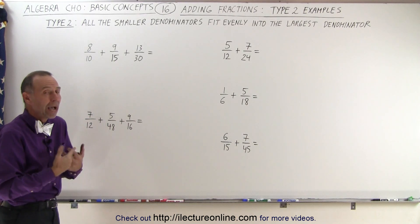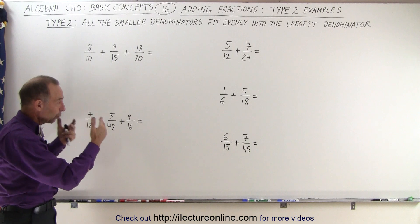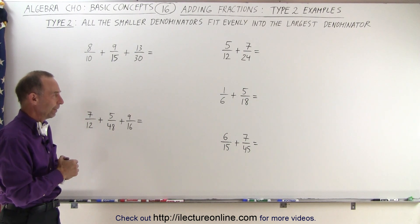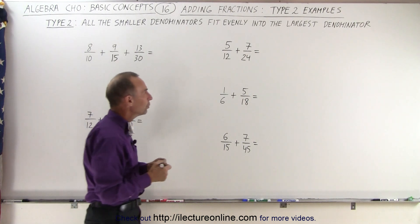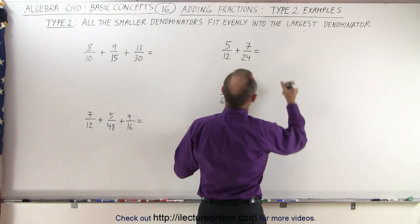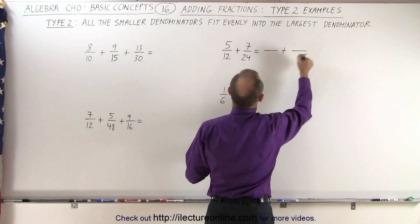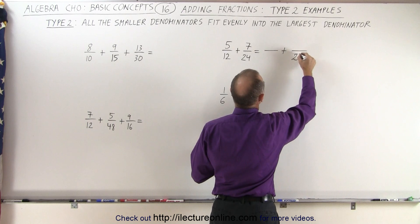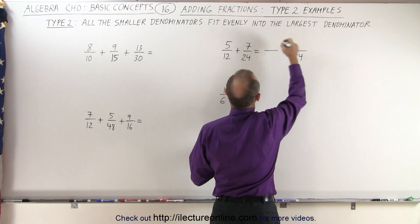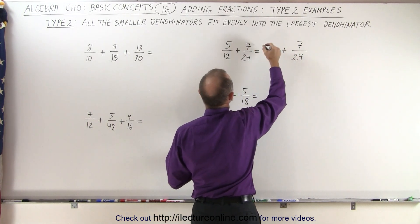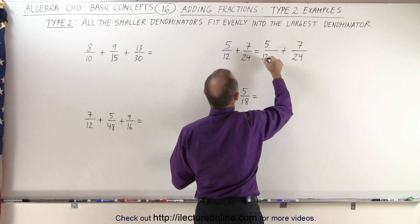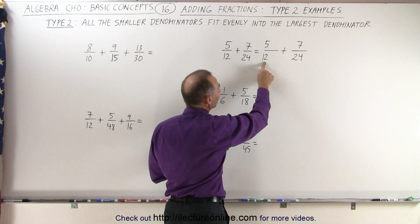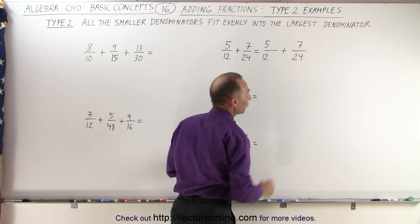Now we're going to show you how to add those fractions where you have the smaller denominators fitting evenly into the largest denominator. What you're going to do is write new fractions. The one that goes unchanged is the one that has the largest denominator, so this becomes 24 and this becomes 7. Then you write the fraction 5 over 12, and we're going to try to make the bottom of this first fraction equal to 24.